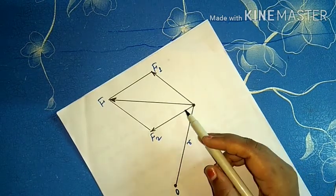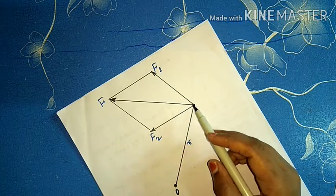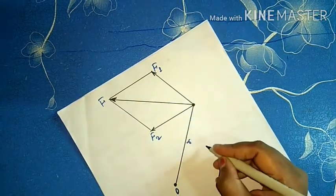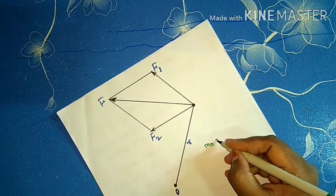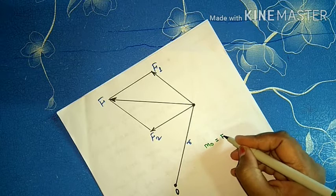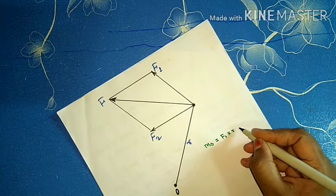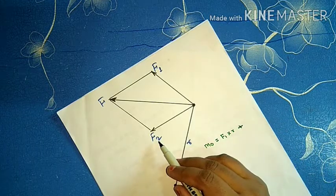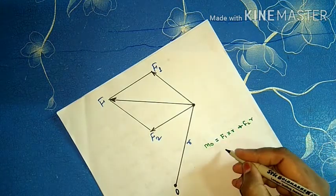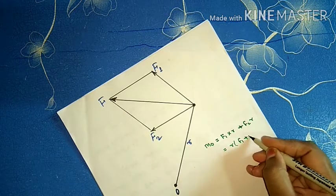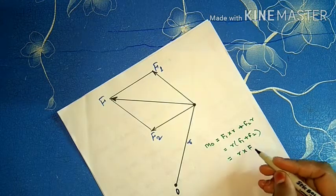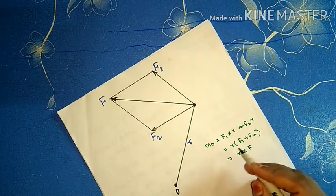Now, let F1 and F2 be the two forces acting on a body whose resultant is F. Then the moment of forces F1 and F2 about point O — we know moment equals force into perpendicular distance. For force F1, the perpendicular distance is R, and also for force F2 the perpendicular distance is R, so we get F1·R plus F2·R. Taking R common, that is R into (F1 plus F2), which equals R into F, because F is the resultant of F1 and F2.